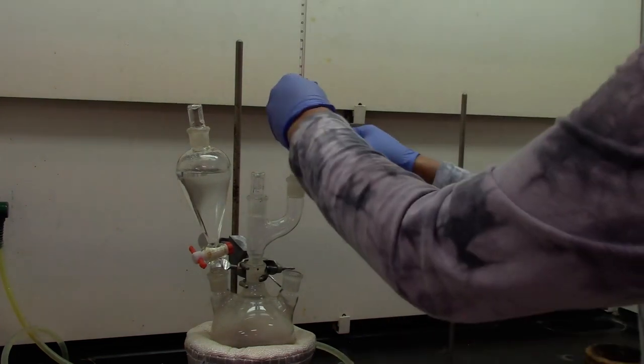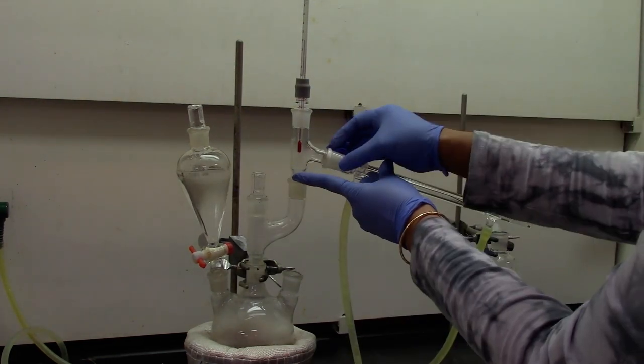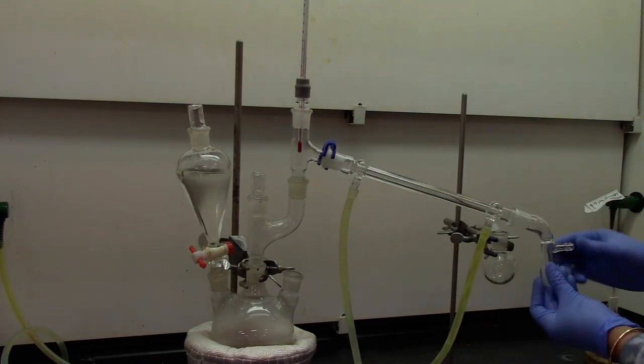Attach the 3-way connector on top of the Claisen head and the thermometer adapter goes on top of the 3-way connector.